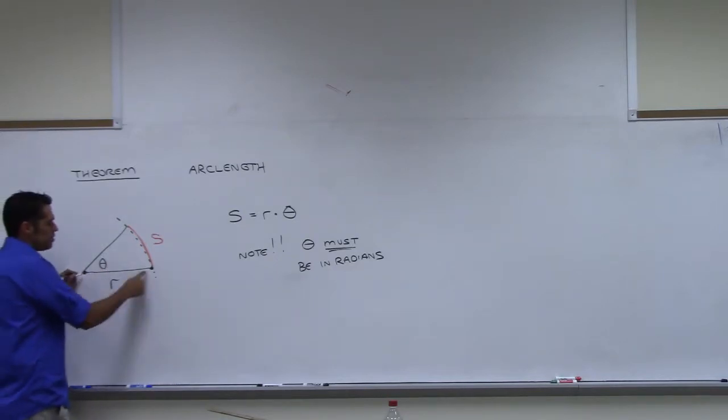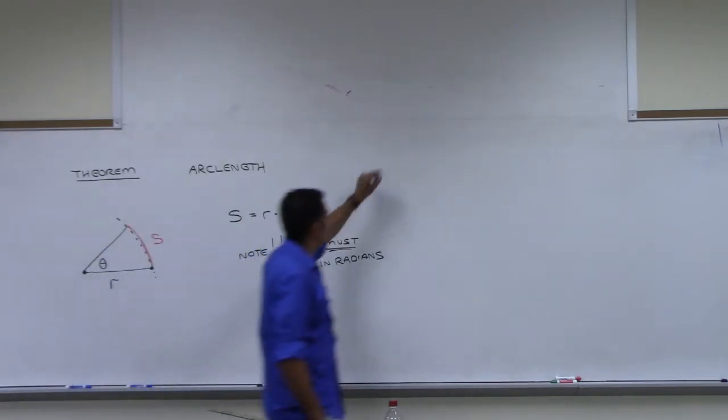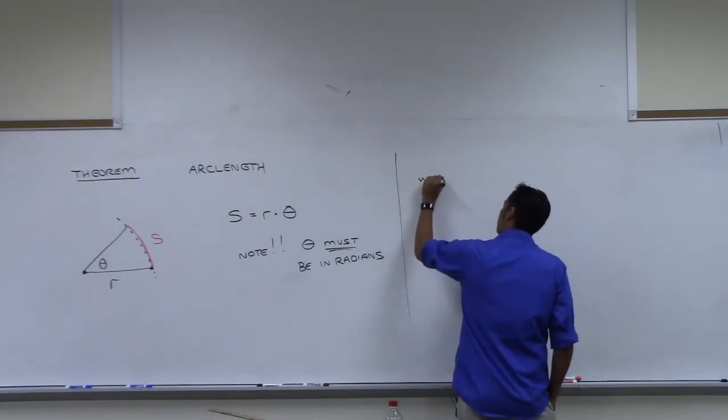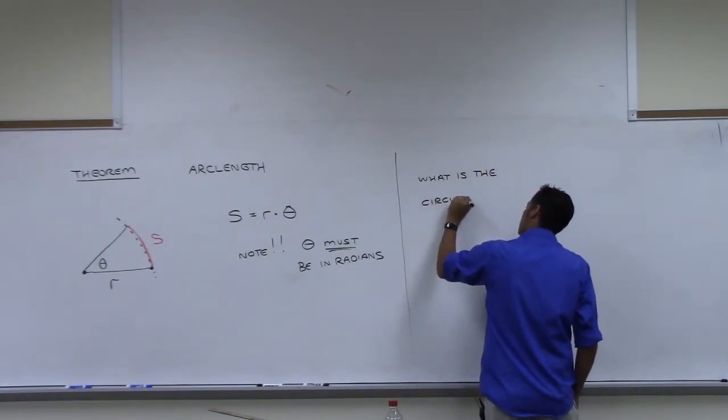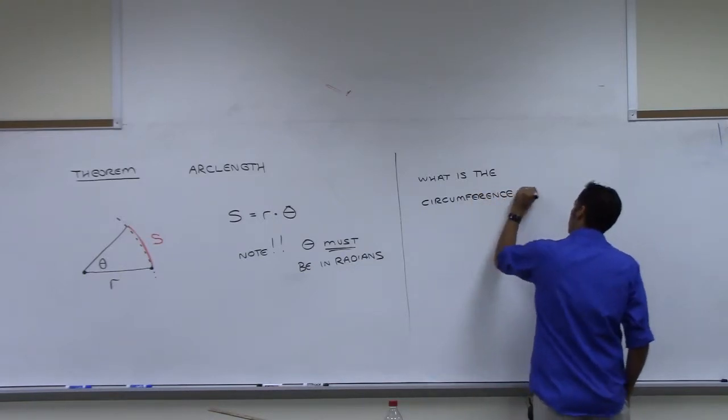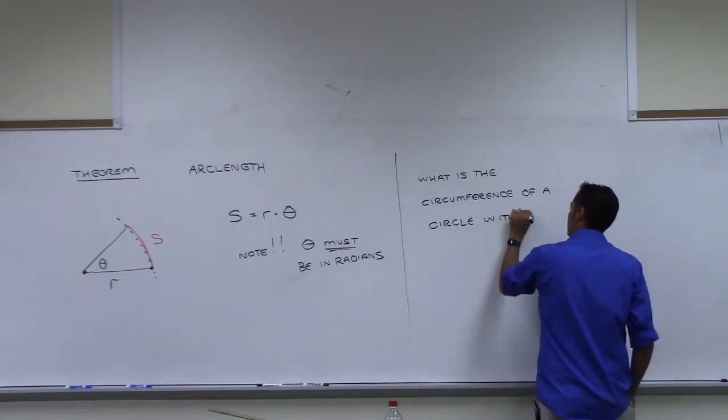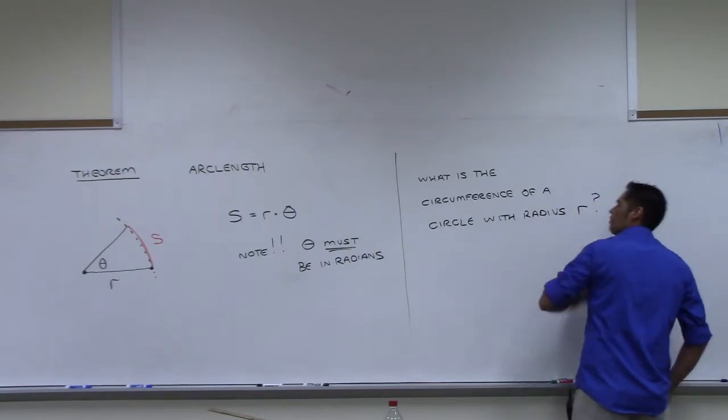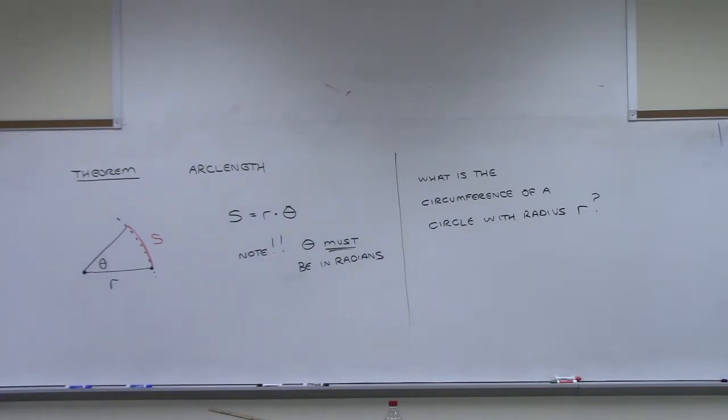If you fix a radius and start rotating through an angle, then the length of the arc that you draw is given to you by that formula. So here's my question to you. What is the circumference of a circle with radius R? 2 pi R. You've heard that before.